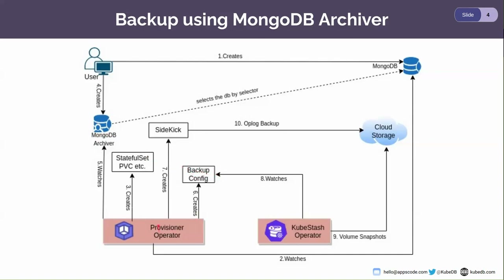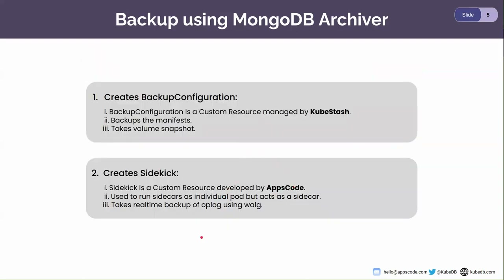The provisioner operator also creates a sidekick. The sidekick takes the oplog backup of MongoDB in real time, and both the oplog and the volume snapshot created by the backup configuration are stored in the cloud. So let's see what are the steps of the backup using MongoDB Archiver.